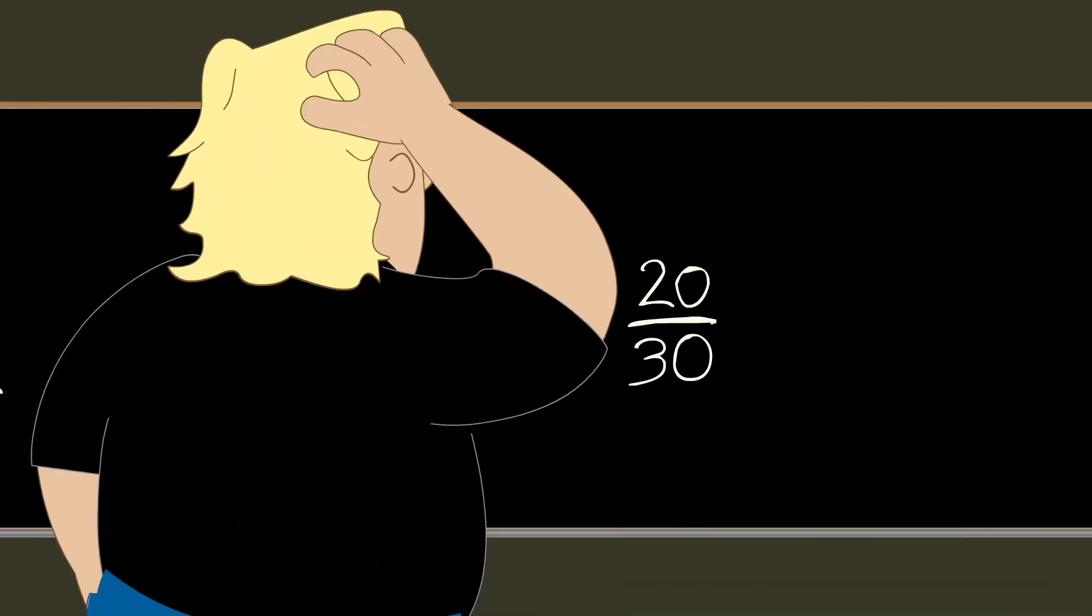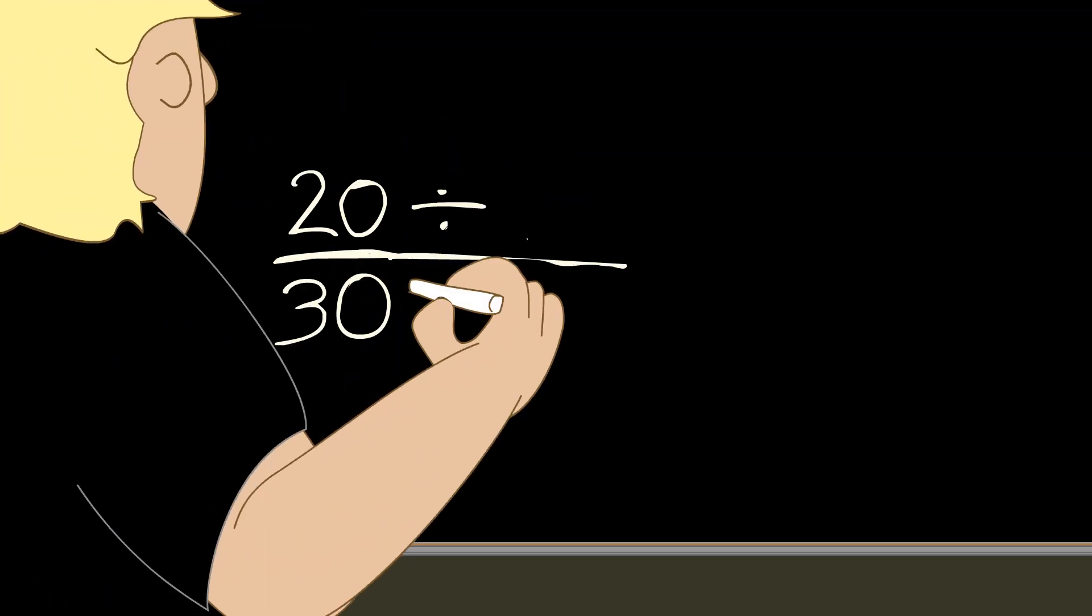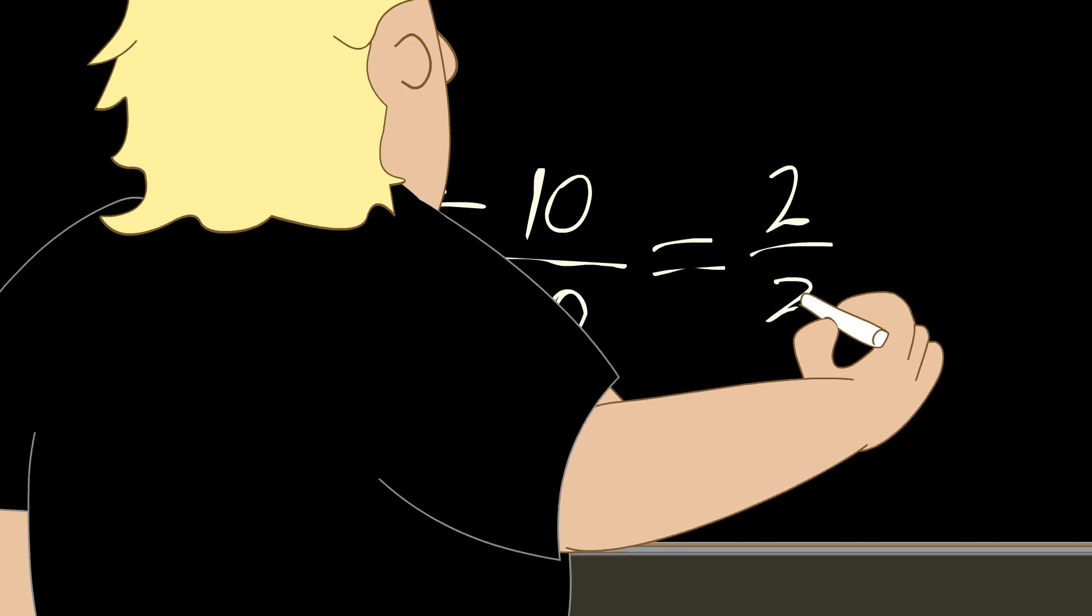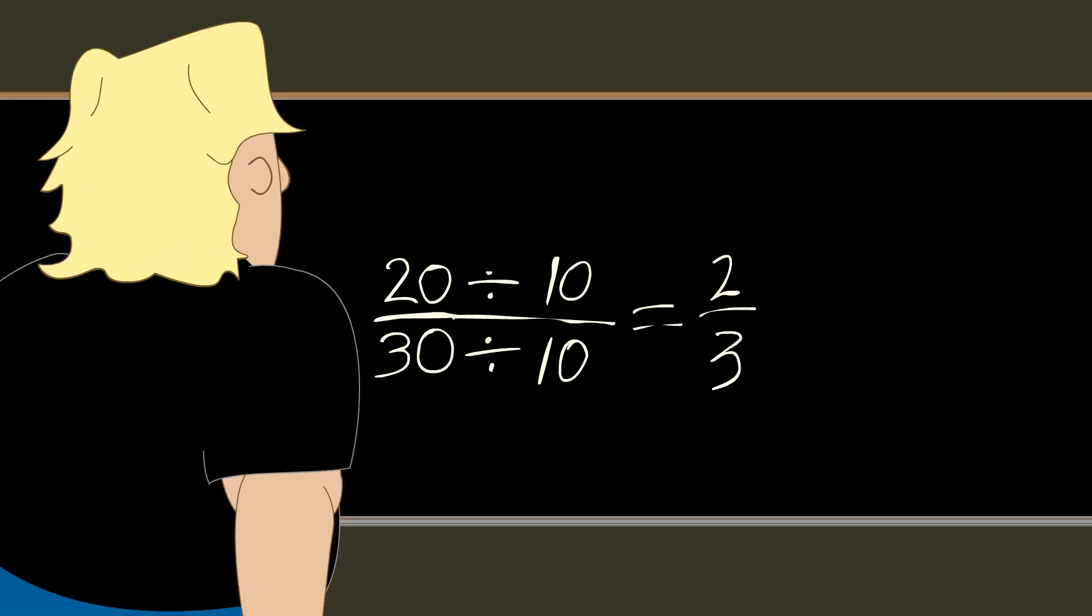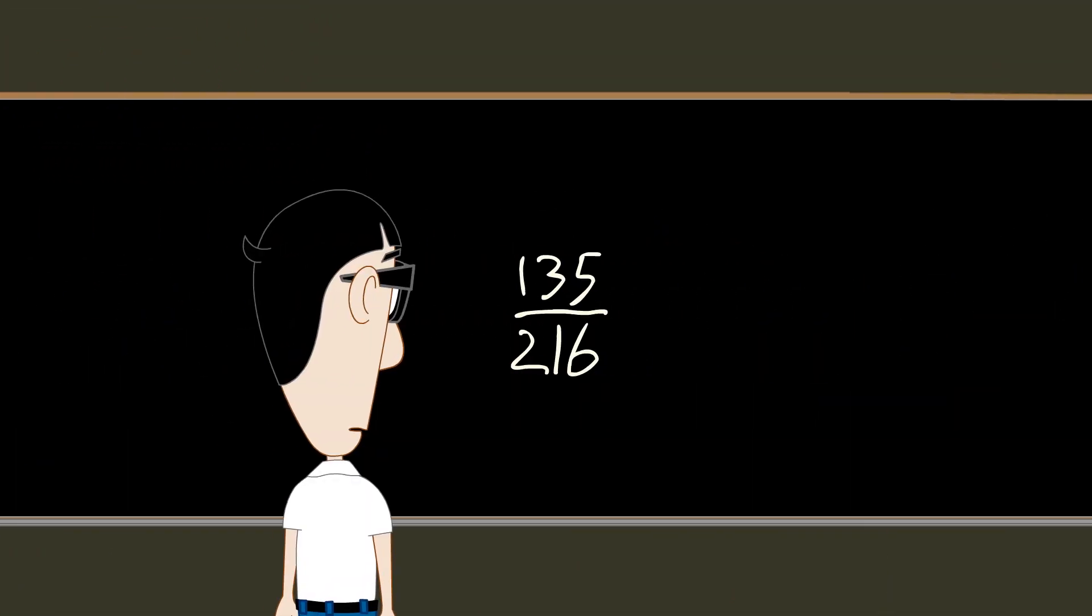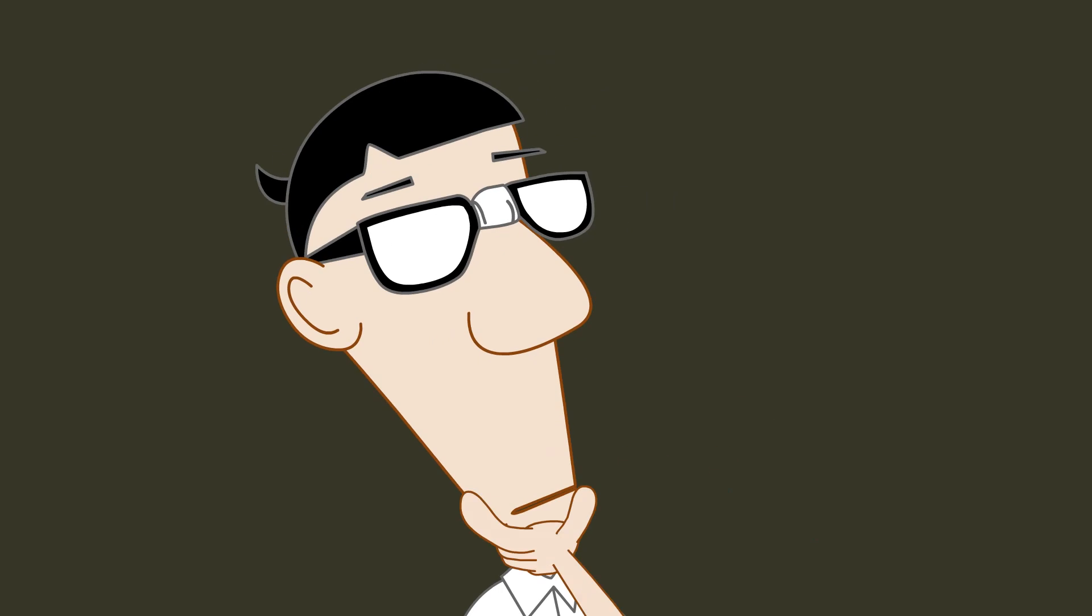And most people would recognize that the numerator and denominator of twenty-thirtieths are both divisible by ten. But then, sometimes it is not so obvious.